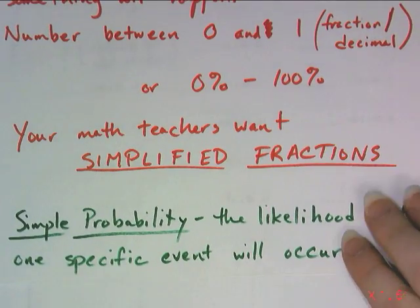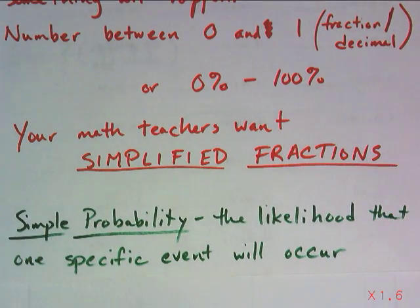So the first type of probability we're going to talk about is simple probability. Basically, that's just the likelihood that one specific event will occur. When you're investigating simple probability, there are actually a few different types.